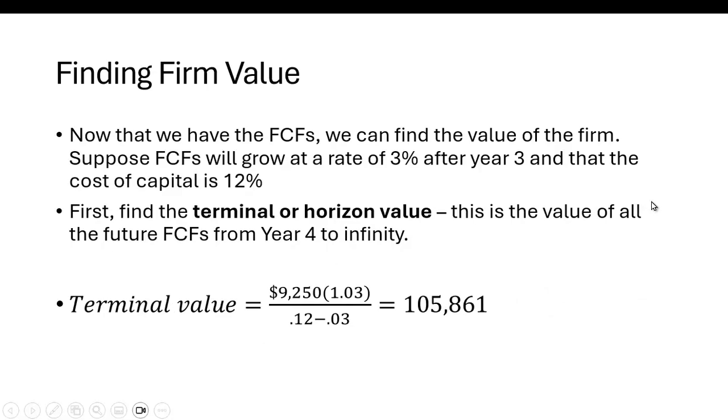So in order to do that, let's make a couple of assumptions here. Suppose that the free cash flows will grow at a 3% rate forever after year three. And let's assume that the cost of capital is 12%. So what we need to do first is we need to calculate the terminal or the horizon value. So that's going to be the value of all the future cash flows from year four to infinity.